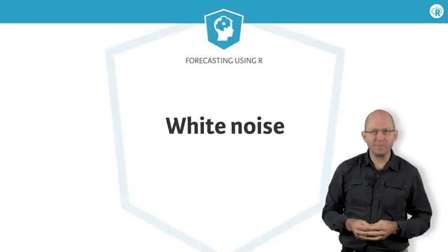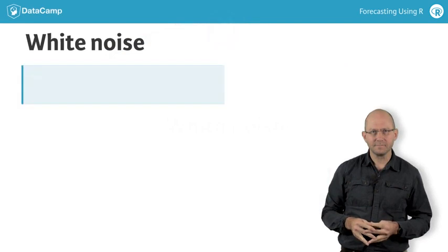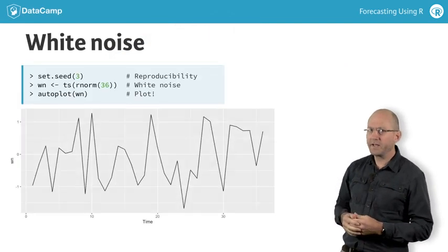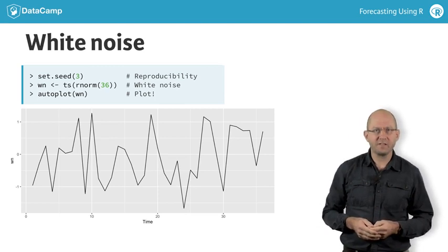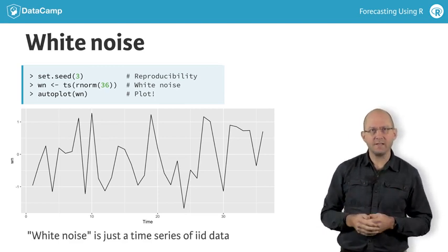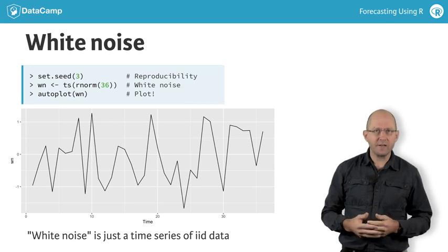Let me show you the most boring time series you will ever see. It's just random, independent and identically distributed observations. In shorthand, statisticians often call this IID data. In other words, there's nothing going on.